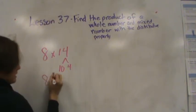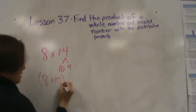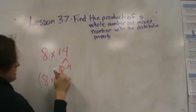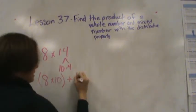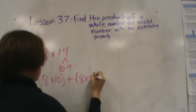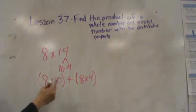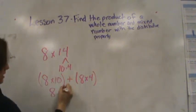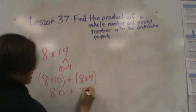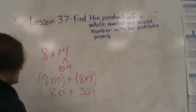So we can do 8 times 10 plus, because 10 and 4 is 14, 8 times 4. 8 times 10 is 80 plus 8 times 4 is 32. If I added those together, I'd have 112.